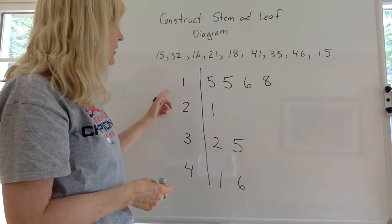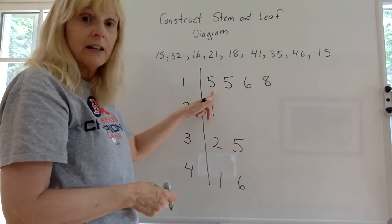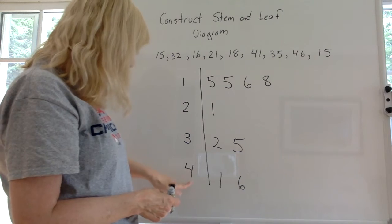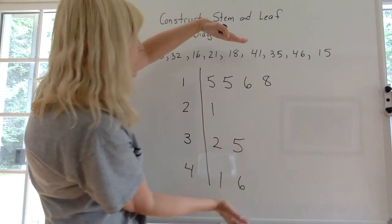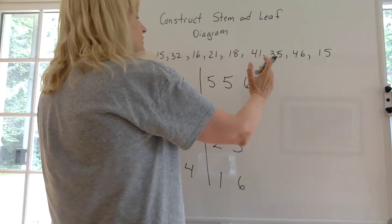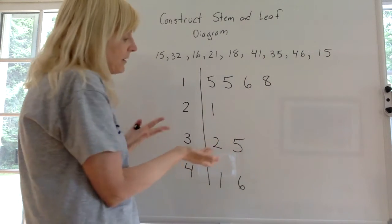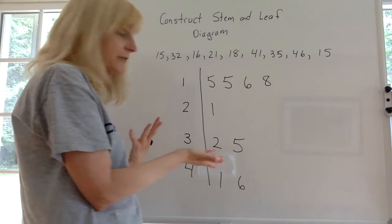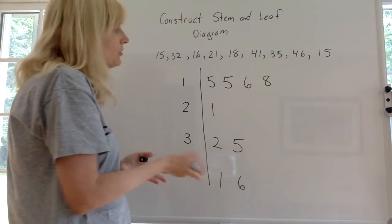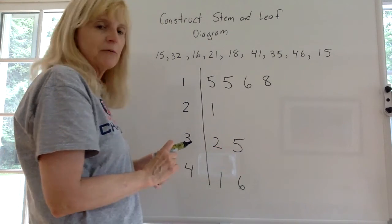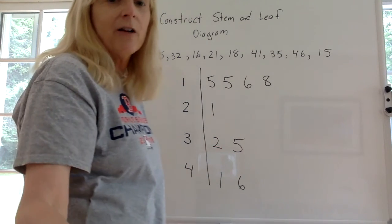You can tell what's the smallest number. The smallest number is a 15. What's the biggest number? The biggest number is down here and it's a 46. You could take this and rotate it 90 degrees counterclockwise and you have like a nice bar graph too of the frequency distribution. So stem and leaf diagrams are pretty cool. Hope that helps.